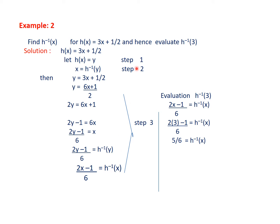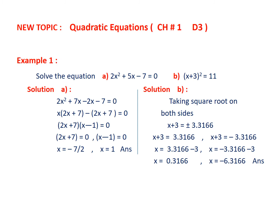We must keep in mind these three steps in all such cases. For evaluation, it is not a difficult task. To find h⁻¹(3), we simply use 3 instead of x in the inverse function h⁻¹(x) = (2x − 1)/6, substituting 3 everywhere. We get h⁻¹(3) = 5/6.